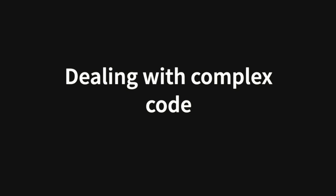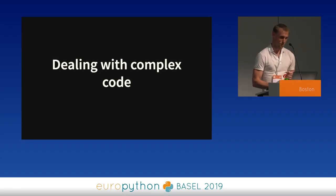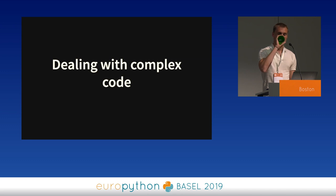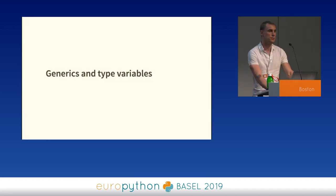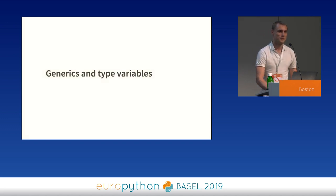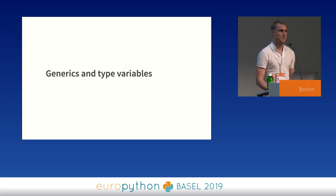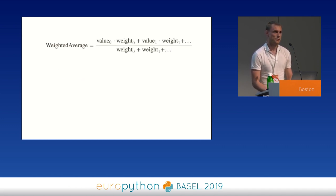Now that you know generally how to approach a codebase, we can talk about a few examples of what you might find in your codebase. The first example is a very useful, frequently used tool: generics and type variables. Who here has heard of these or maybe even used them? Wow, that's really good. I think this is one of the most useful and needed features.